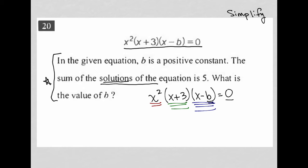For instance, if X squared equaled zero, that would make this entire product correct. If X plus three was equal to zero, I wouldn't care what X squared equaled. I wouldn't care what X minus B equaled. Because simply X plus three equaling zero would also make this entire product true.